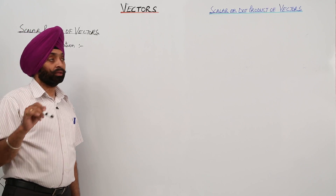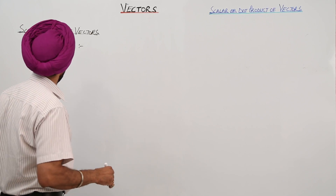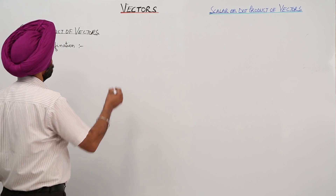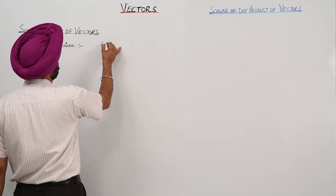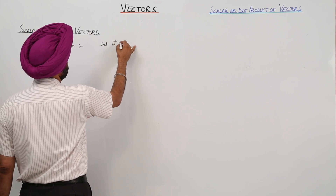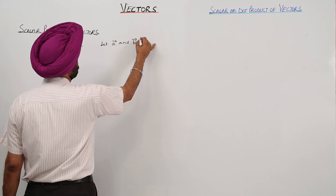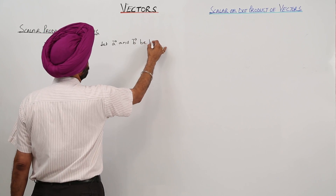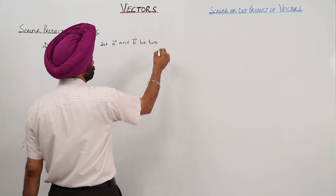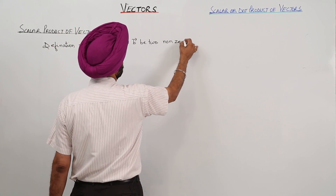Now, let's define the scalar product of 2 vectors. Definition: Let vector A and vector B be two non-zero vectors.